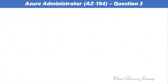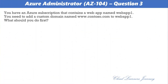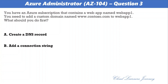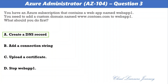Question number three. You have an Azure subscription that contains a web app named Web App 1. You need to add a custom domain named www.contoso.com to Web App 1. What should you do first? Options: a) create a DNS record, b) add a connection string, c) upload a certificate, d) stop Web App 1. The correct option is: create a DNS record. You can use either a CNAME record or an A record to map a custom DNS name to App Service.